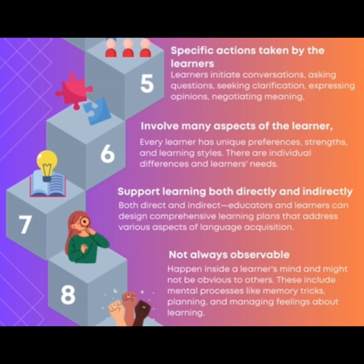Point eight is that learning strategies are not always observable — they happen inside a learner's mind and might not be obvious to others. These include mental processes like memory tricks, planning, and managing aspects of learning, as well as internal thinking and strategizing. Learning involves a lot of thinking, remembering, and planning that others can't see. It is also important to handle emotions well, as feelings like nervousness or excitement affect how well learners engage with the material. Much of the learning happens inside the learner's mind but is essential for understanding and progress.